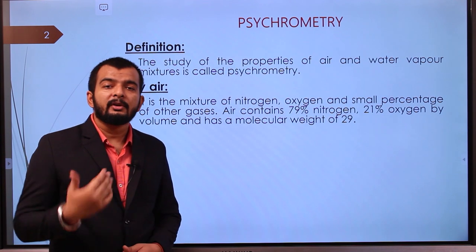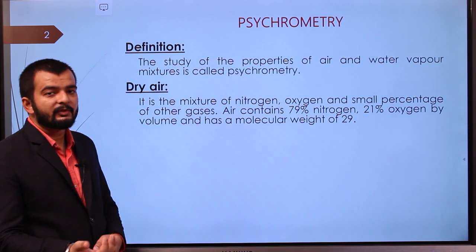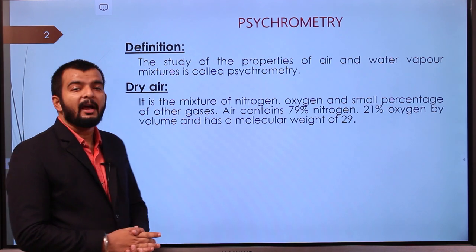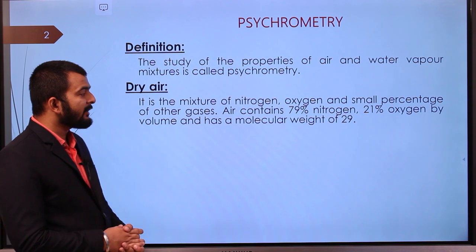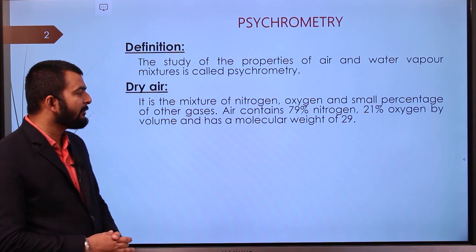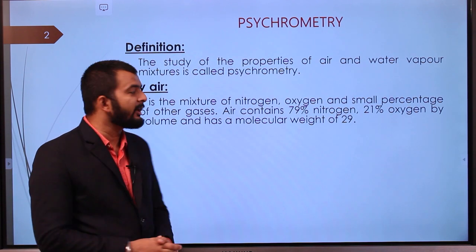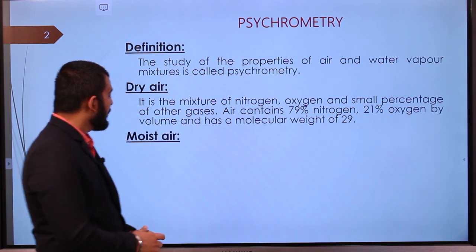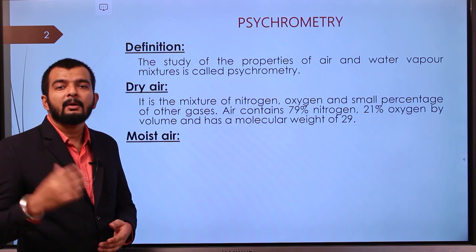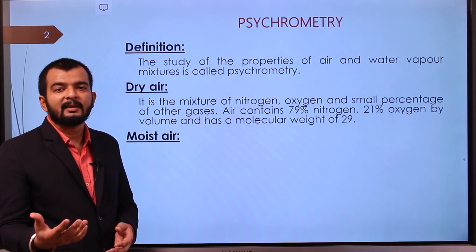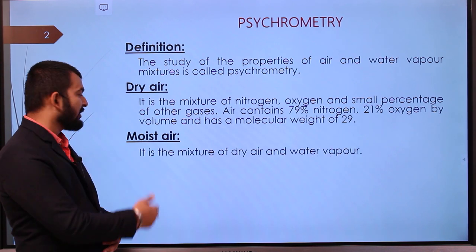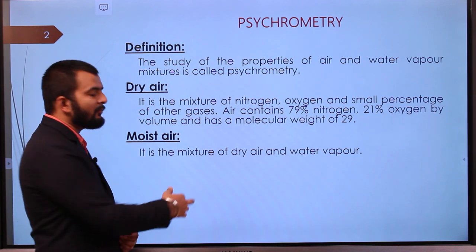What is dry air? The normal air which we breathe in without any moisture content is called dry air. Air is a mixture of nitrogen, oxygen, and small percentage of other gases — it contains 79% nitrogen and 21% oxygen by volume, and has a molecular weight of 29. Moist air is a mixture of dry air and water vapors.